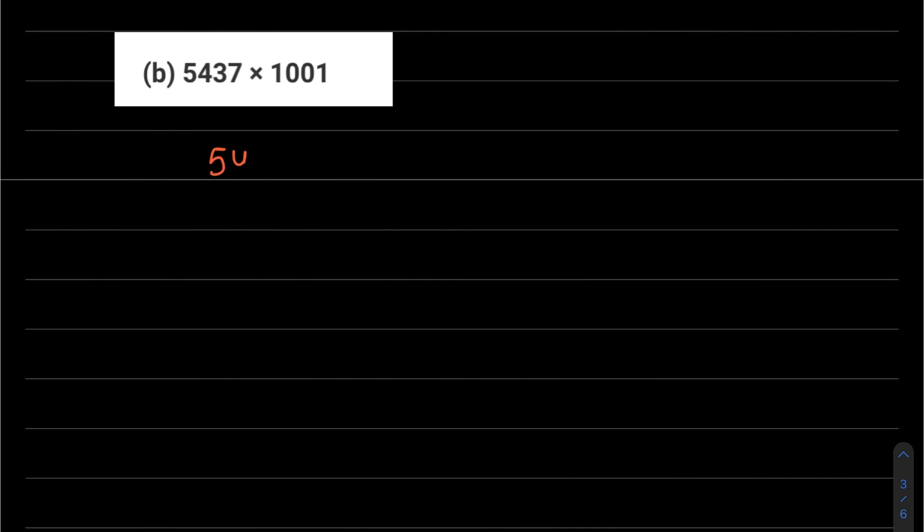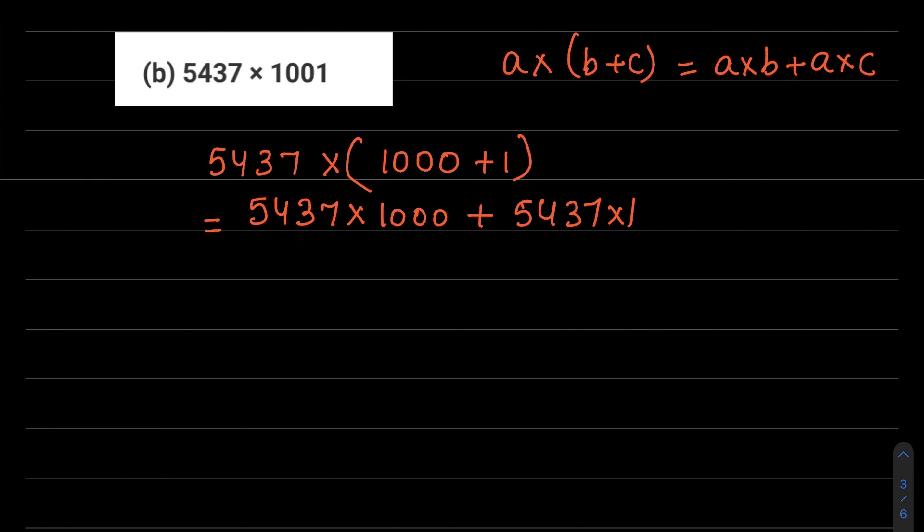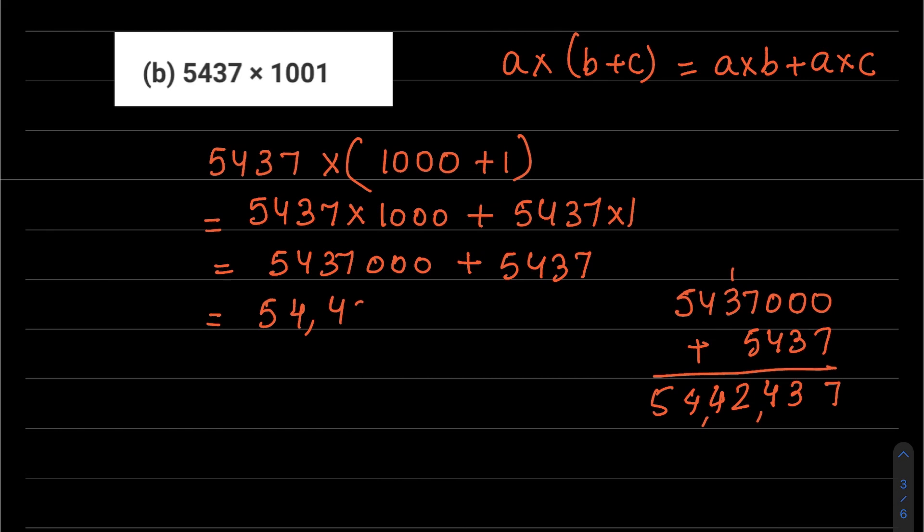We get the answer as 73,528. Part b: 5437 multiplied by 1001. 1001 we can write as 1000 plus 1. This is a into b plus a into c, so this becomes 5437 into 1000 plus 5437 into 1. So 5437 triple 0 plus 5437. Now we add this: 5437, three 0s, and 5437.